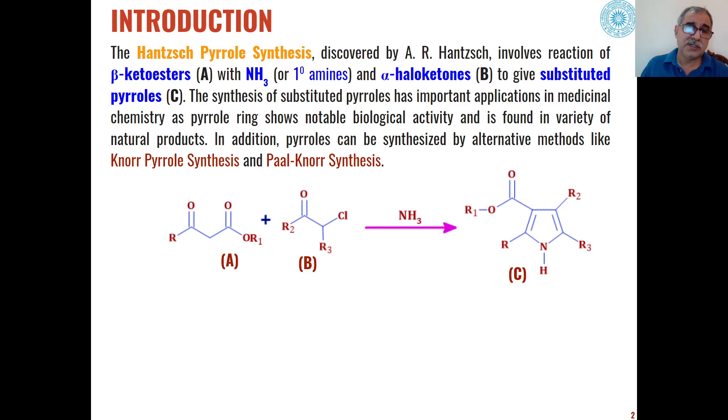This involves the reaction of beta-keto esters with nitrogen sources like ammonia or primary amines in the presence of alpha-halo ketones. All these substrates undergo multi-component reaction for the synthesis of pyrroles as the product.